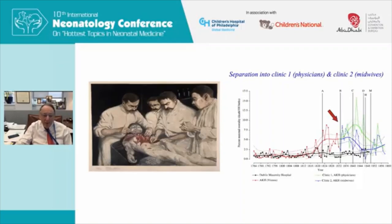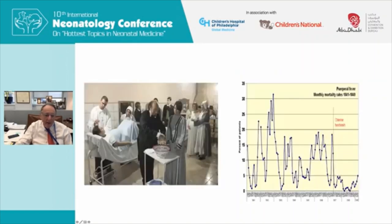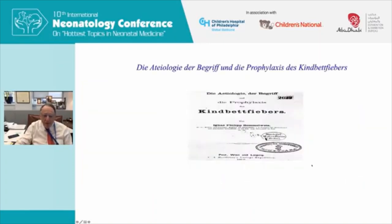Not knowing about bacteria or germs, Semmelweis concluded there was something being transmitted from those women in autopsy. He made everybody soak their hands in a chlorinated lime solution before performing examinations of women in childbirth. The mortality rate, as you can see here — this is actually from Semmelweis's diary — went down dramatically when chlorine handwashing was introduced.